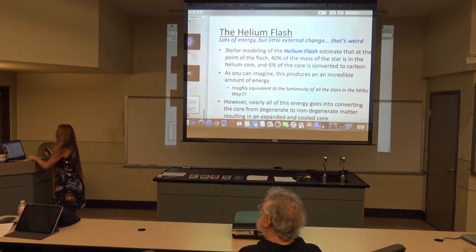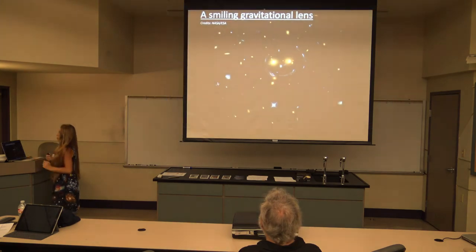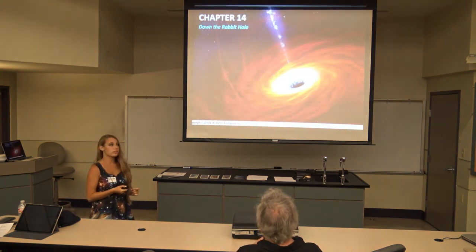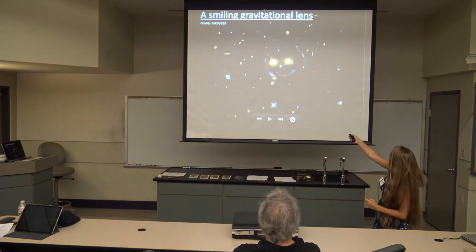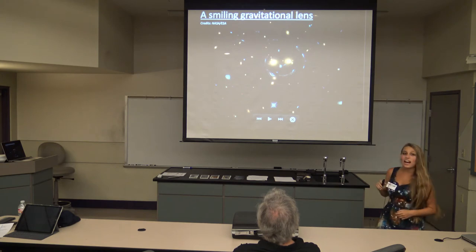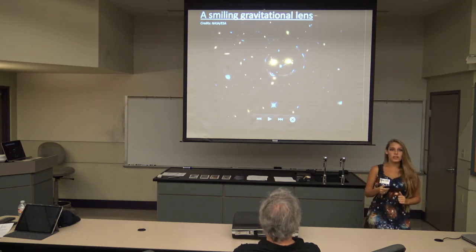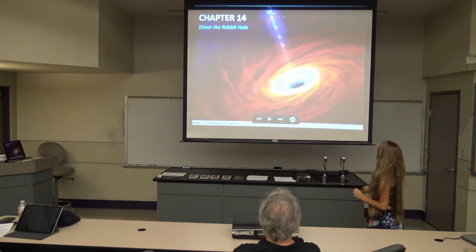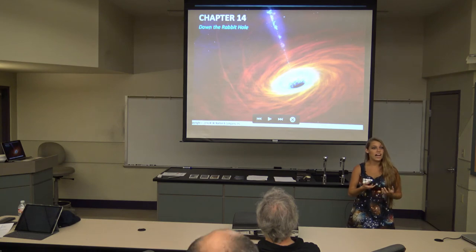Now we'll discuss what happens to high-mass stars. Gravitational lensing is actually the result of black holes bending space-time so much that we can see things directly behind them. We proved this with a solar eclipse many years ago. We're going to go down the rabbit hole and talk about general relativity, black holes, and neutron stars — the result of high-mass stellar deaths. Gravity will always win: the one force that a star fights for its entire life is gravity.